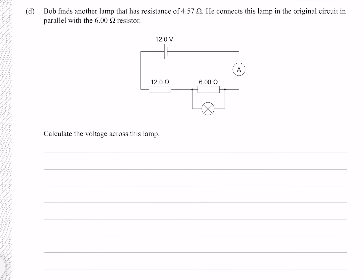Question D. Bob finds another lamp that has a resistance of 4.57 ohms. He connects this lamp in the original circuit, in parallel with the 6 ohm resistor. Calculate the voltage across this lamp. If we call the voltage across our lamp VL, the voltage across our lamp is going to be the same as the voltage across our 6 ohm resistor, basically the voltage across this entire section.